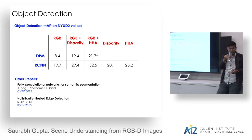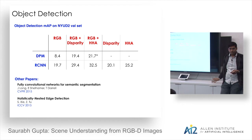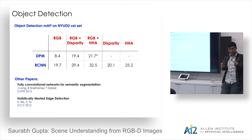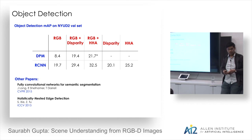Q: Why is global context helpful if CNNs work bottom-up locally? A: In the RCNN world, you crop the bounding box around the object and lose all information outside it. The geocentric embedding bakes in the global scene context — where the object is relative to the whole scene — before cropping. That's why it helps detection specifically: you preserve global context that would otherwise be lost.